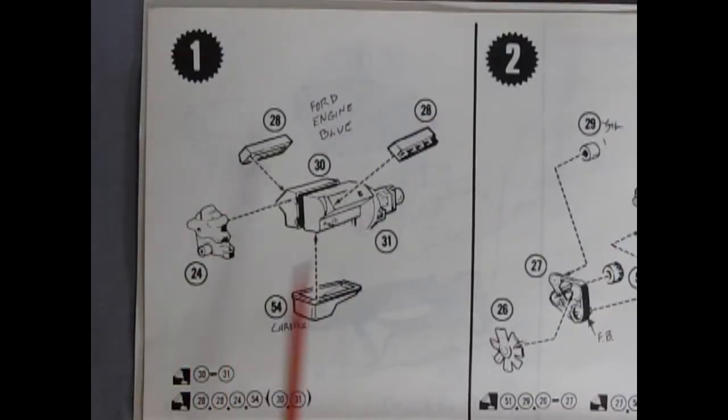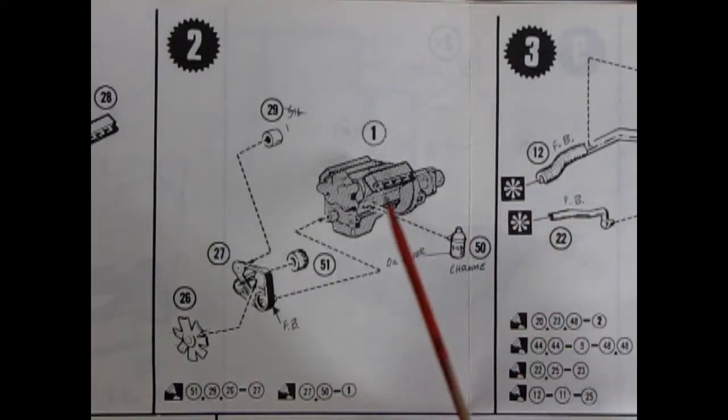Here we have our Mustang 351 and you can see we've got our engine halves left and right as well as a transmission, front timing cover, cylinder heads and the oil pan gluing in. Panel 2 shows our engine getting further put together with our oil filter, our power steering pump, our alternator, our fan belts and our fan.